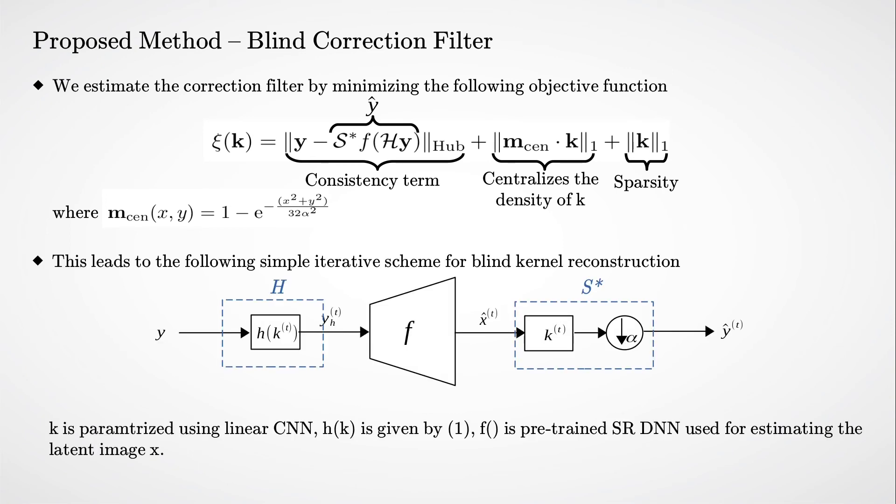We take the observed image Y and convolve it with H from the expression we saw previously. Then we upsample it using a pre-trained SR DNN for estimating the latent image X. That is then downsampled using K to get Y hat, which we require to be as close as possible to Y.